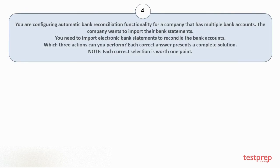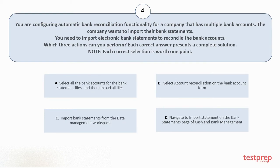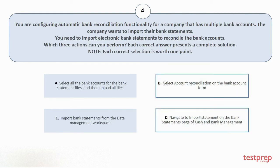Question number 4: you are configuring automatic bank reconciliation functionality for a company that has multiple bank accounts. The company wants to import their bank statements. You need to import electronic bank statements to reconcile the bank accounts. Which 3 actions can you perform? Each correct answer presents a complete solution. Each correct selection is worth 1 point. Your options are: A. Select all the bank accounts for the bank statement files and then upload all files. B. Select account reconciliation on the bank account form. C. Import bank statements from the data management workspace. D. Navigate to import statement on the bank statements page of cash and bank management. The correct answers are option B and D.